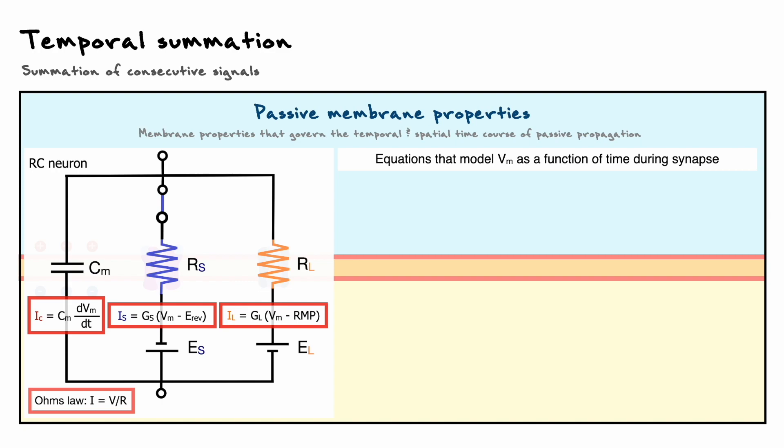Now, in our system, there are two dynamic states to consider: during the synapse when the synaptic channels open, and after the synapse when the neuron returns to baseline. Let's start with during the synapse.